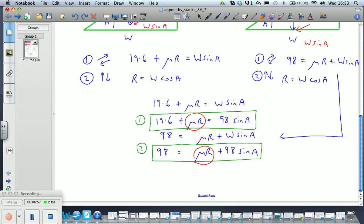We can eliminate μR, and that leaves an expression for sin A. So adding, we have 19.6 and 98, that's 117.6, and μR is cancelled, and that's equal to 2 times 98 sin A.